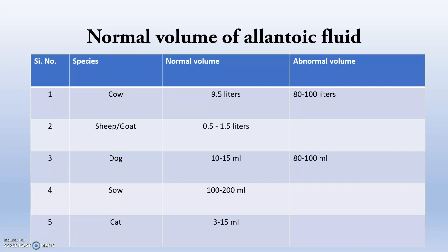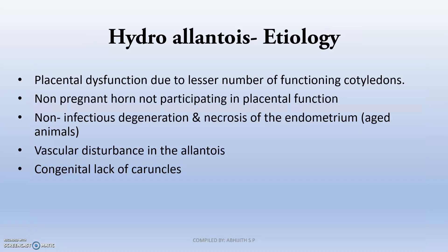In the dog, normal allantoic fluid is 10 to 15 ml and can go up to 100 ml. Regarding hydroallantois etiology, there is placental dysfunction due to a lesser number of functional cotyledons. Cotyledons and caruncles must form a placentome-like condition to properly exchange nutrients and remove waste. When there is dysfunction due to fewer functional cotyledons, waste fluid structures get accumulated. Also, when the non-pregnant horn does not participate in placental function, this leads to fewer cotyledons and less placentation.